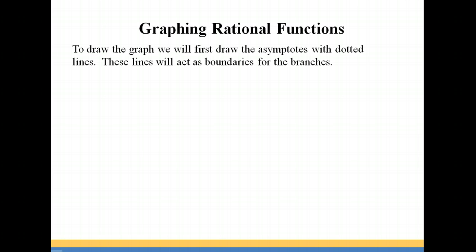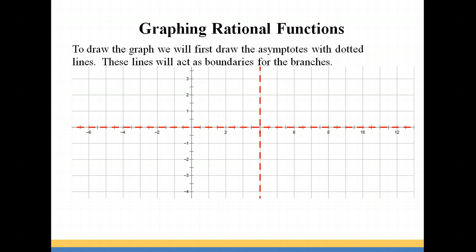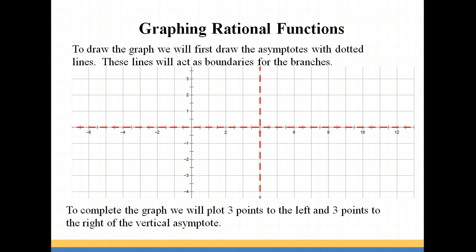So to draw a graph, what we're going to do is draw the asymptotes first using dotted lines. These lines will act as boundaries for the branches of our graph. To complete the graph, we will need to plot at least 3 points to the left and 3 points to the right of the vertical asymptote.